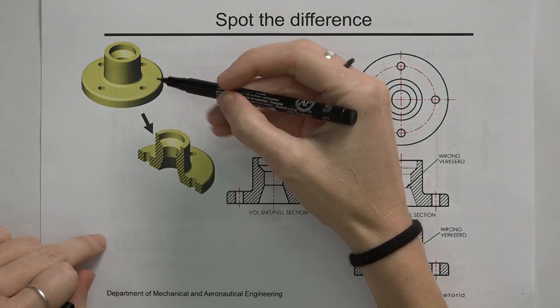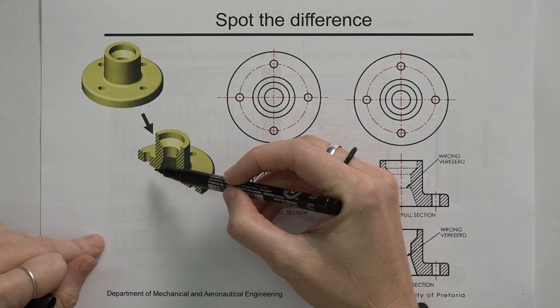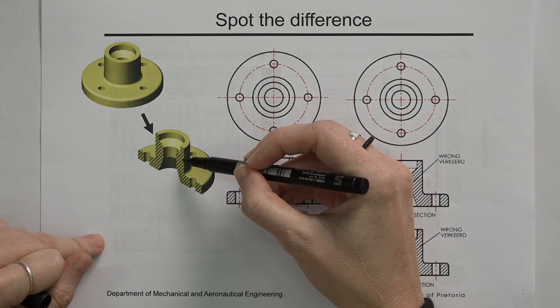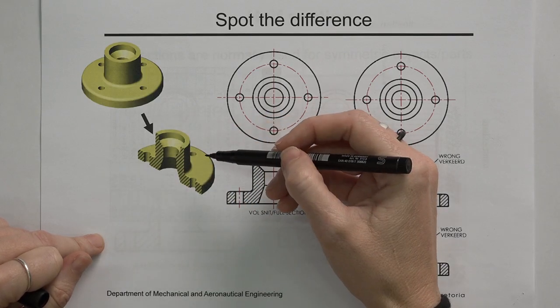So this is an example where you see a component. If we cut through the component and you can see these hatched sections, that's actually what we will see when we cut through the component.